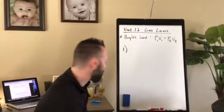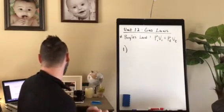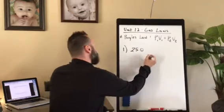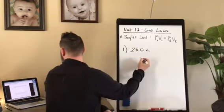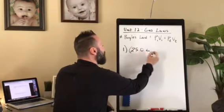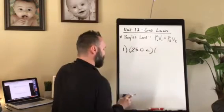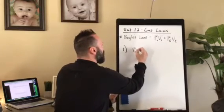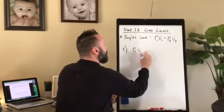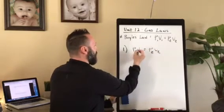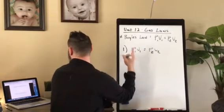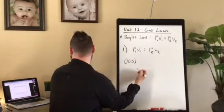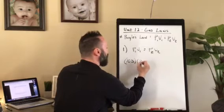So for our first practice problem, the pressure of 25 liters of gas changes from 105 kPa. So we started with P1V1 equals P2V2. And our pressure of our first gas was 105 kPa. Our volume of our first gas was 25 liters.